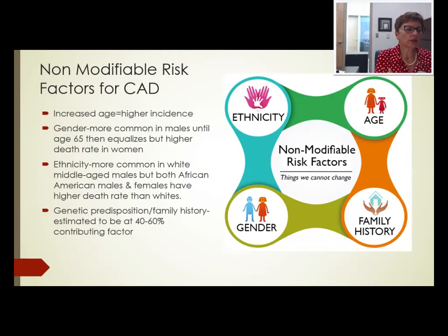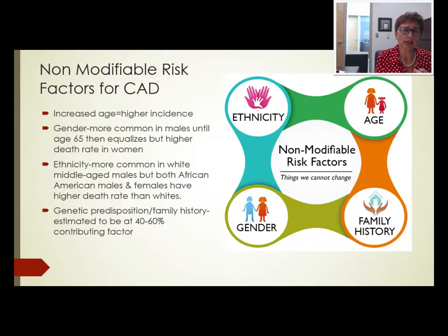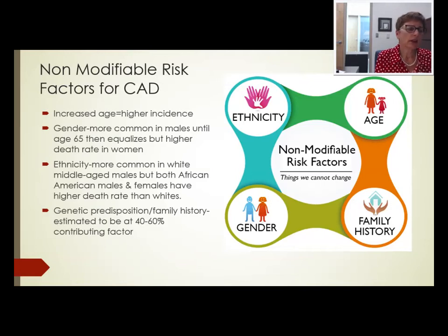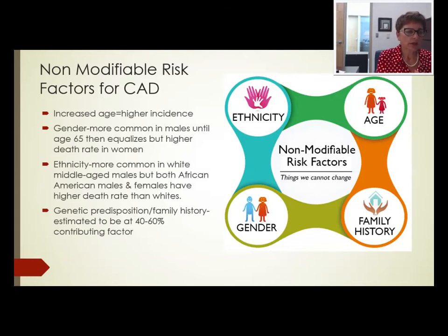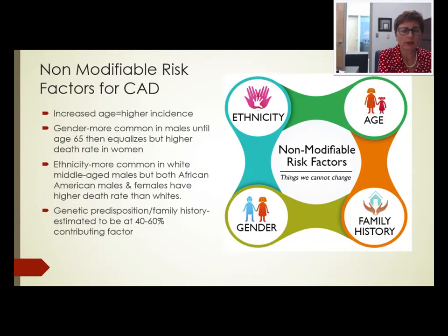Even so, if you're an African-American male, you still need to be monitoring it because both males and females have a higher death rate than whites, though that may be because there are fewer studies. It's more common in males until age 64–65 because estrogen has protected women, but after age 65 women have a higher death rate. A family history of CAD — especially a mother who had a heart attack at a young age — is estimated to be a 40 to 60 percent contributing factor.